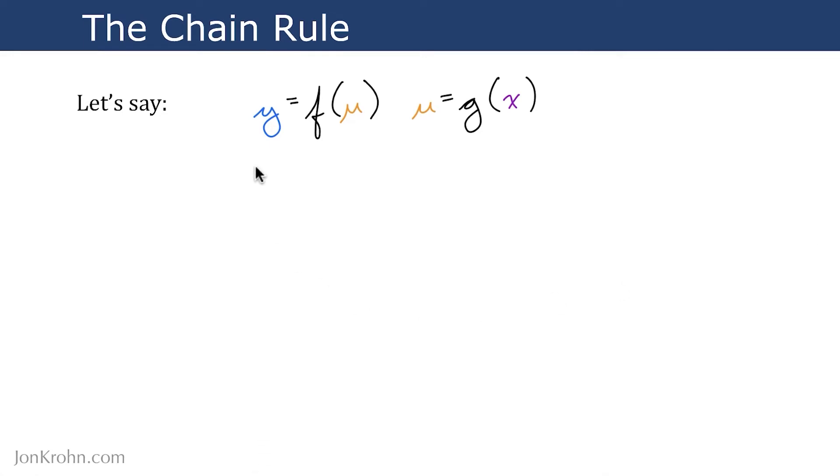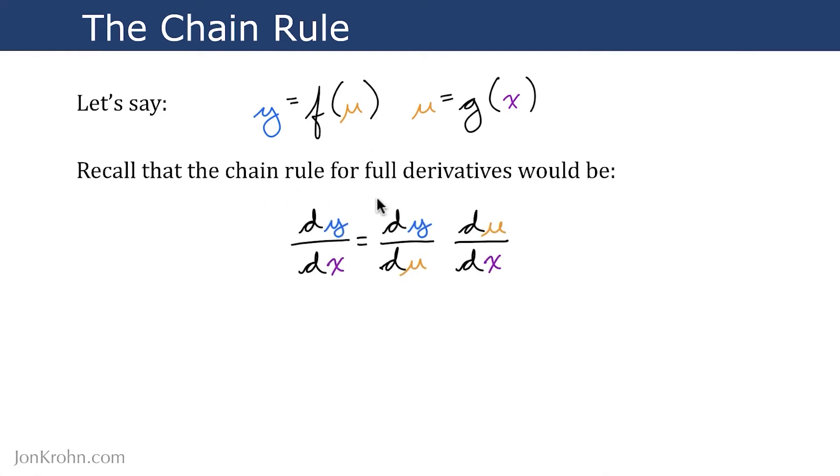In a situation where we have nested univariate functions, where u is a function of x and y is a function of u, recall that the chain rule for full derivatives would be: we can calculate the full derivative dy/dx by calculating the derivatives of these nested functions. We calculate dy/du and separately calculate du/dx, then multiply dy/du by du/dx, thereby canceling out the du terms and leaving us with dy/dx. This allows us to have potentially very long chains in machine learning, maybe hundreds or thousands of functions chained together, ultimately giving us the full derivative from our output all the way through to some deeply nested input.